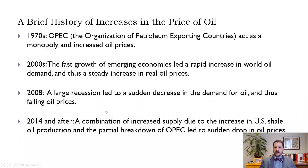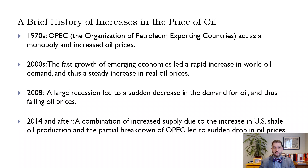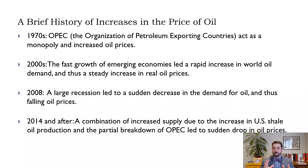OPEC — the Organization of Petroleum Exporting Countries — acts as a cartel. It can't control the price of oil because not all oil producers are in OPEC, but it can influence the supply and therefore the price. In the 2000s, the increase in price was really driven by demand — as countries, especially China and India, developed, their demand for oil increased, pushing up the price. In 2008, the financial crisis caused a large drop in demand for oil and a fall in oil prices. Afterwards, an increase in U.S. production and disagreements within OPEC, as well as problems in Venezuela, caused a further drop in oil prices.